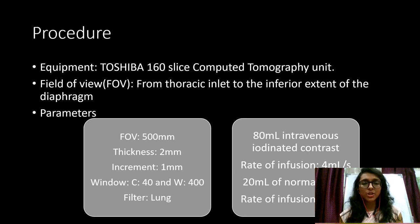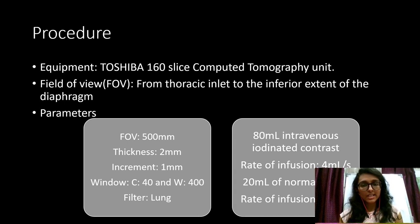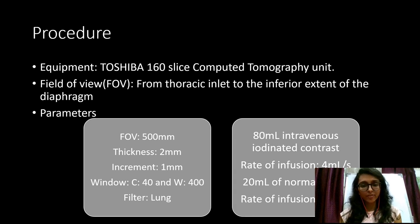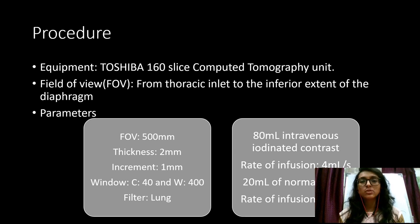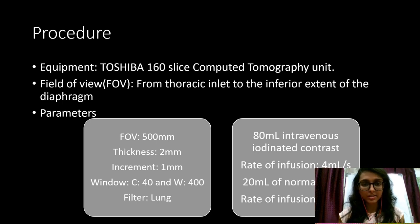The procedure was performed using a Toshiba 160-slice CT unit. The field of view covered the thoracic inlet to the inferior extent of the diaphragm. Parameters were: FOV 500 mm, slice thickness 2 mm, increment 1 mm, lung filter applied, and window 40 to 400. After a plain scan, 80 ml of intravenous iodinated contrast was injected at 4 ml per second, followed by 20 ml of normal saline at 4 ml per second.